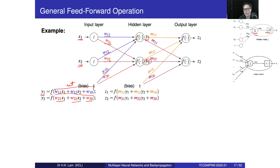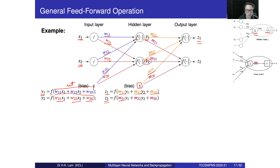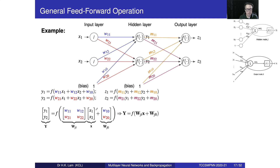We do the same for y2: w21 times x1, plus w22 times x2, plus w20 times the bias, passed through the activation function to compute y2. The same idea applies to the output layer: z1 is computed as y1 times m11 plus y2 times m12 plus 1 times m10. We can do the same for z2 using m21, m22, and m20. Values propagate layer by layer to the output.